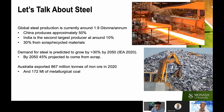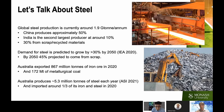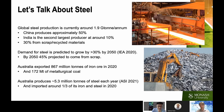A big part of our economy is based on producing raw materials for steel. Yet Australian steel production tells a different story — we only produce around 5 to 6 million tonnes of steel each year, a small fraction of our iron ore exports. Perhaps even more surprising, that's not enough to meet our domestic needs: we import around a third of our steel each year as well.